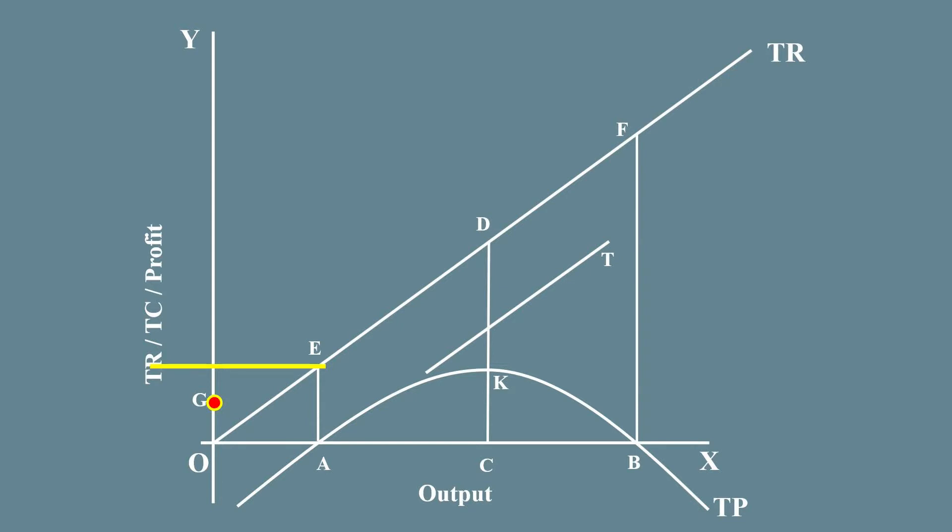Draw the total cost curve from point G in such a way that it passes through point E, touches the line T at point H, and again passes through point F as shown in the figure. Name it as TC. We have completed the diagram.